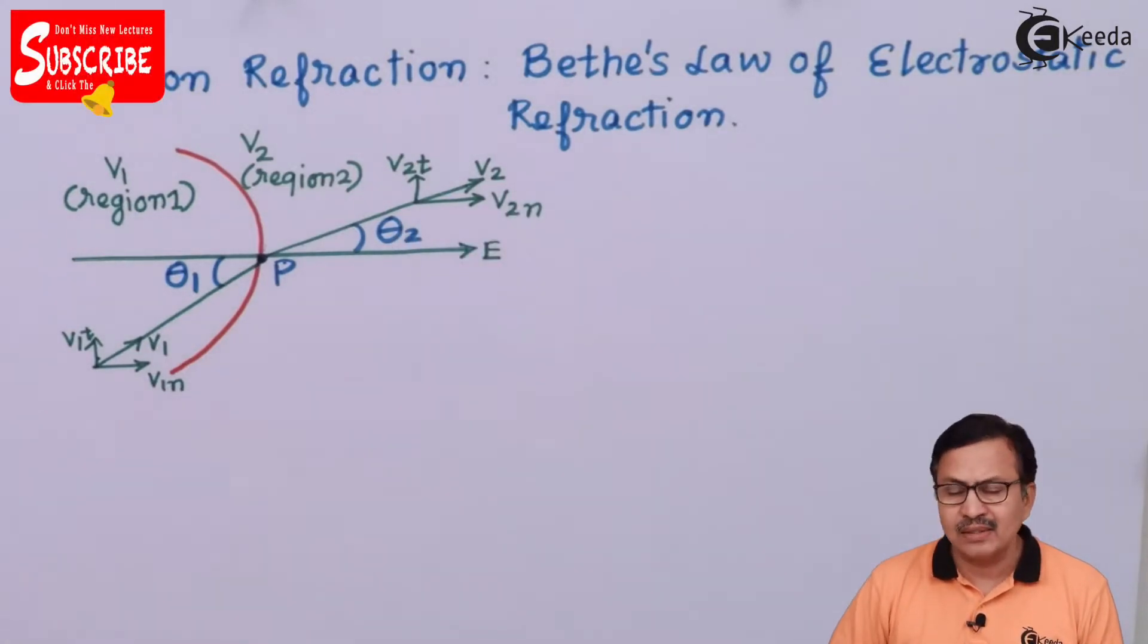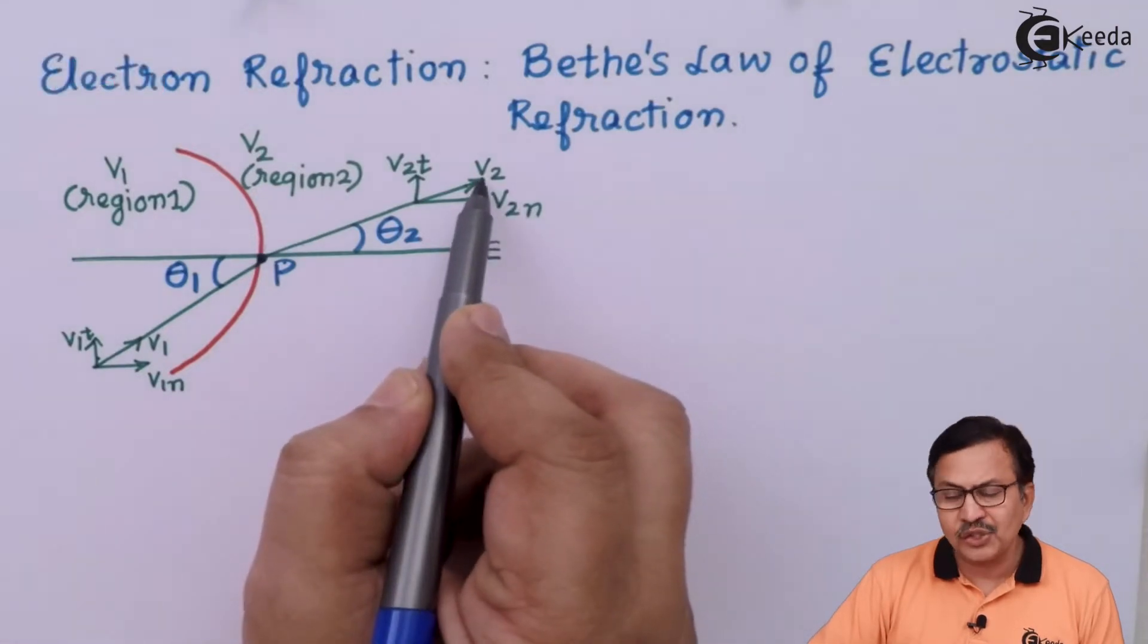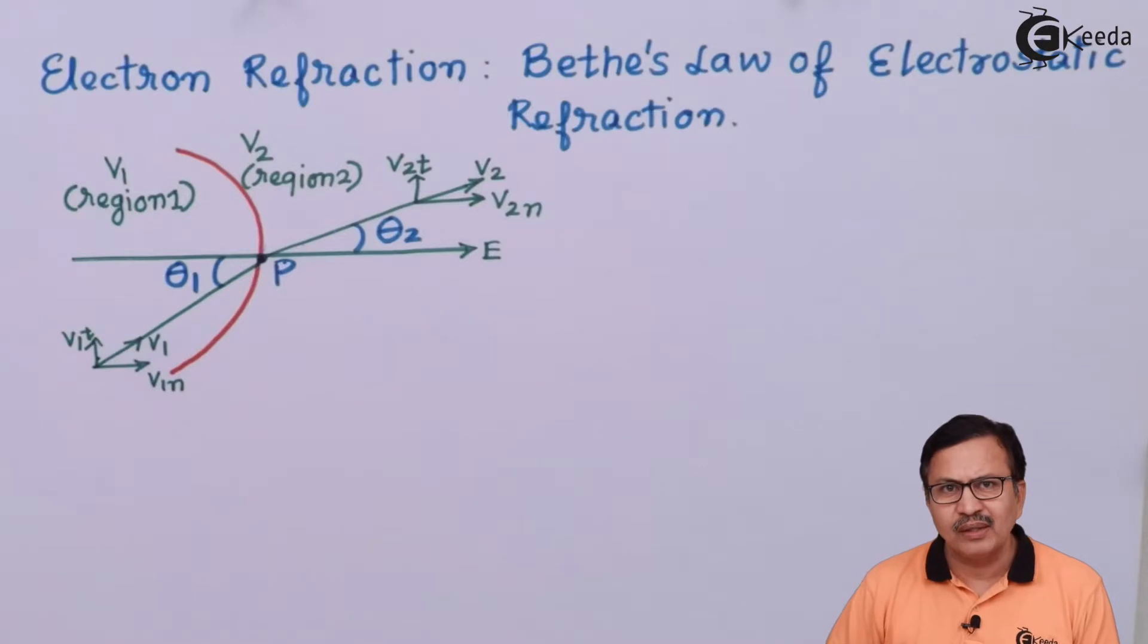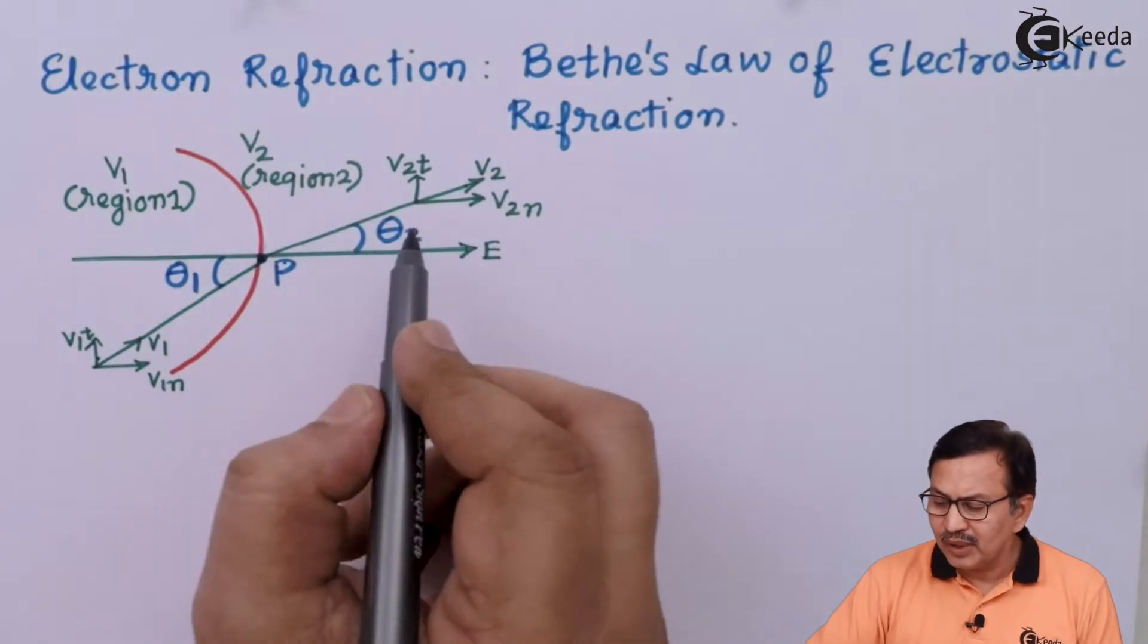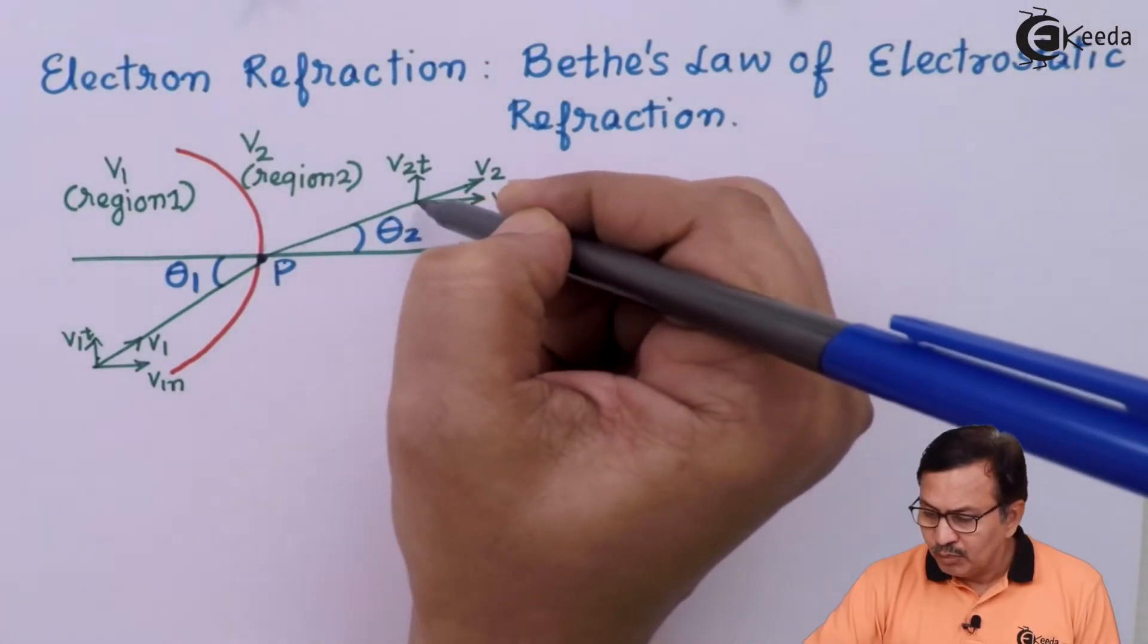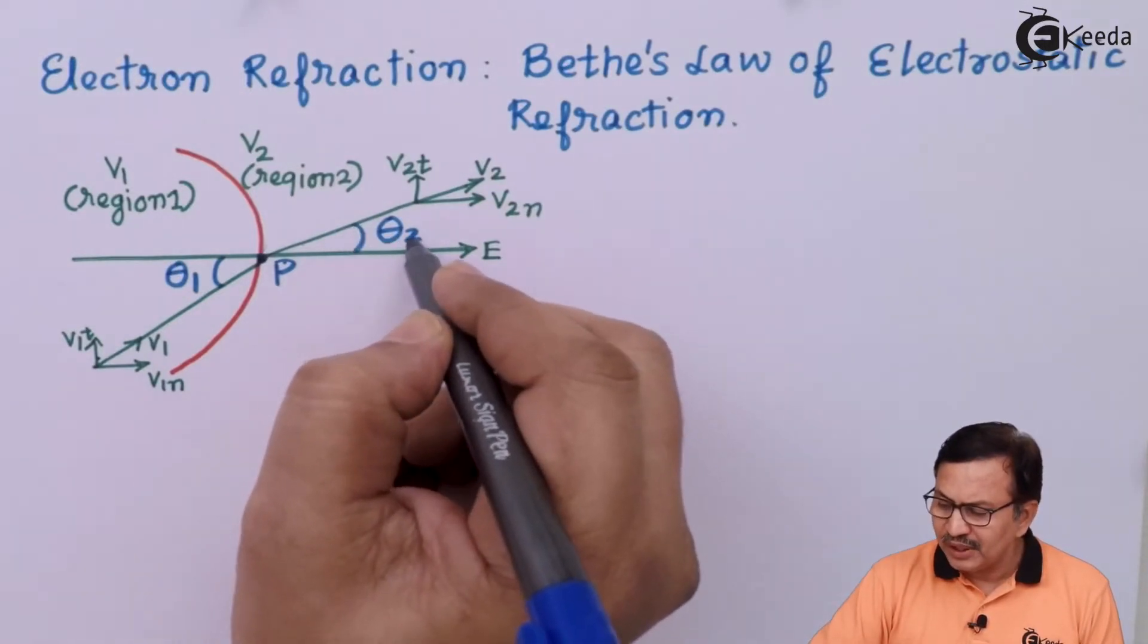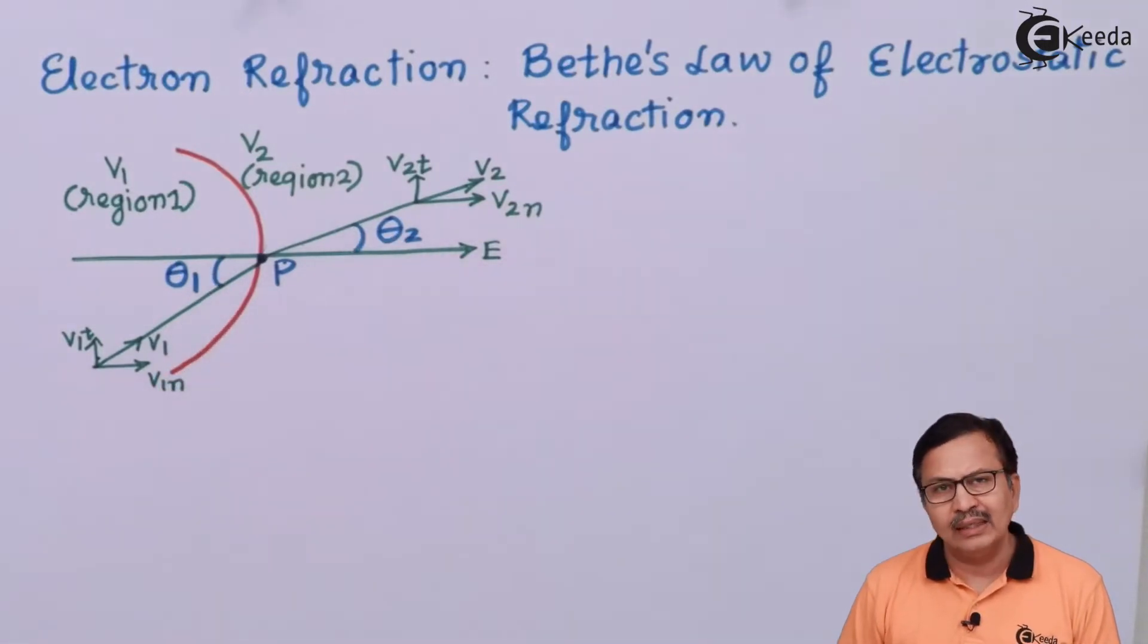Now, since the normal component increases, the direction of V2 will not remain the same as that of V1. Rather, it will move towards E, and hence your angle theta2 will be less than angle theta1.